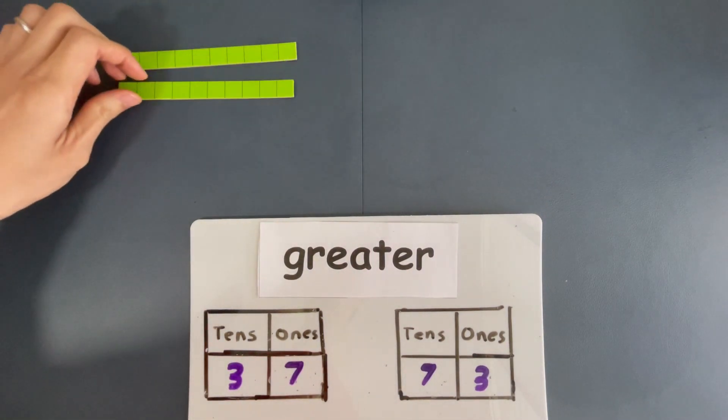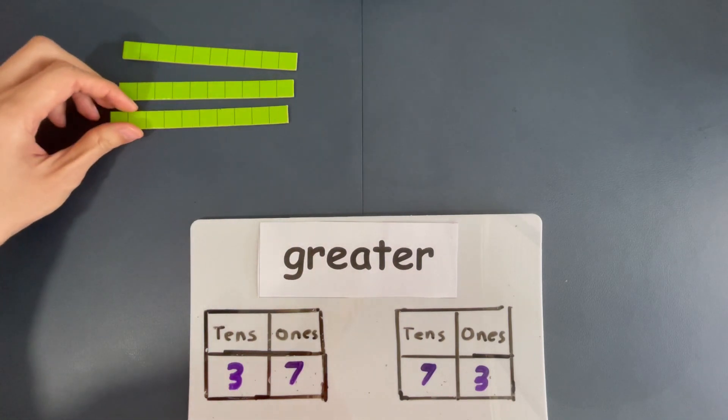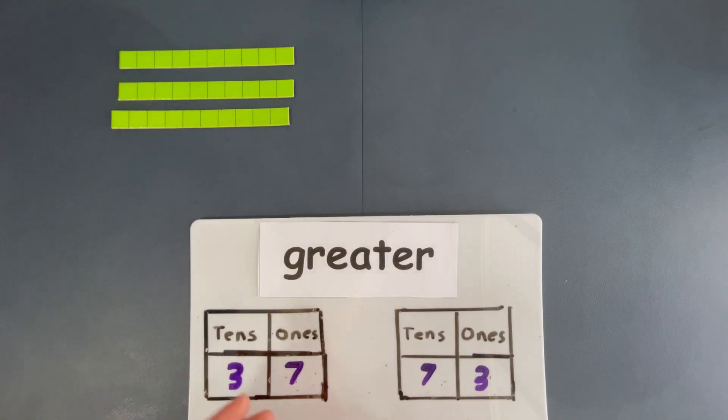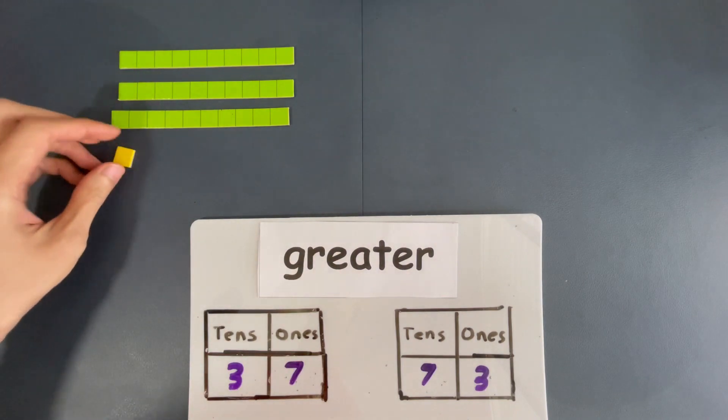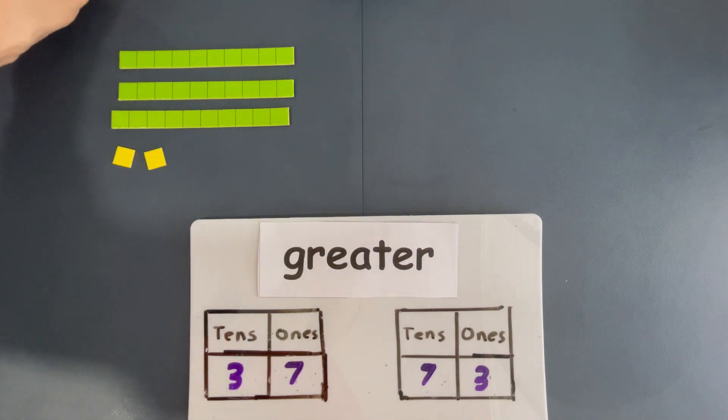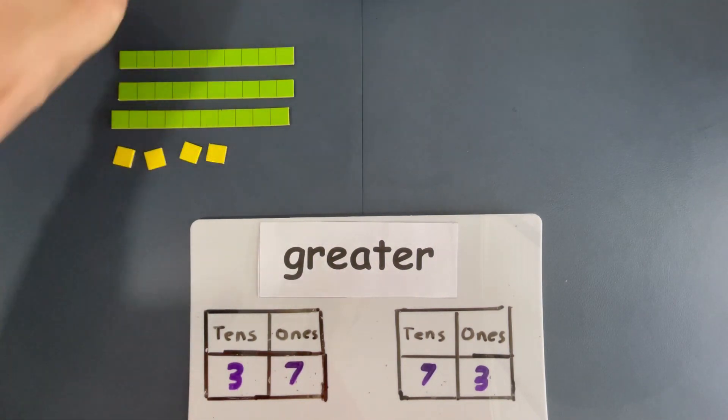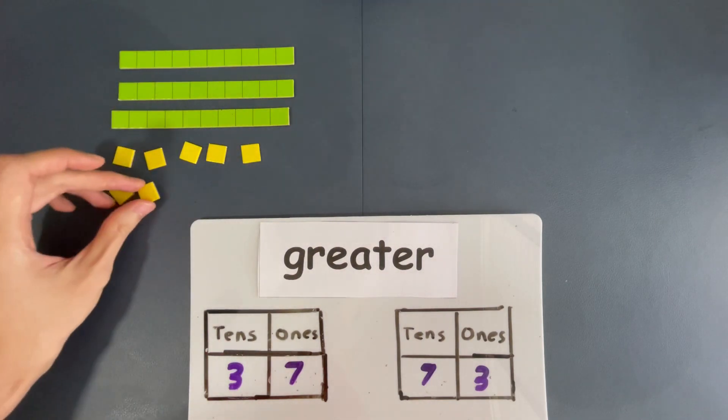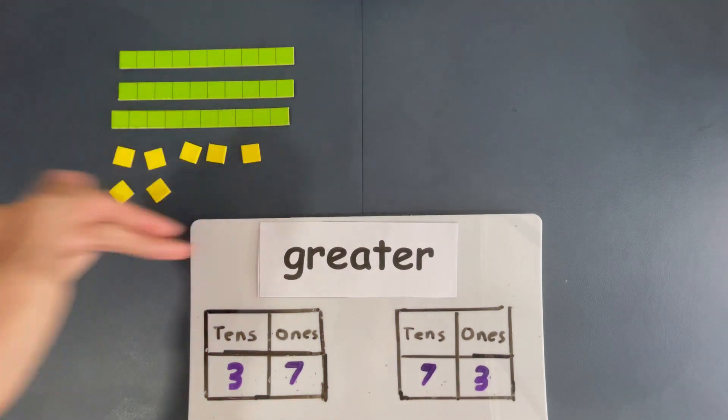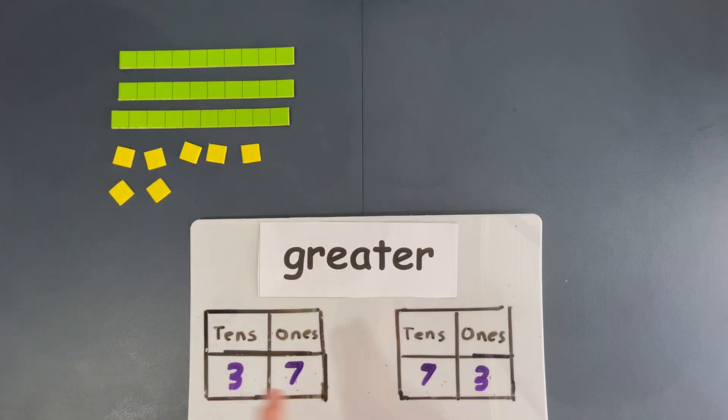One ten, two tens, and three tens. So, there are three tens over here. Seven ones. Let's make seven ones. One one, two ones, three ones, four ones, five ones, six ones, and seven ones. So, this is 37. Okay?